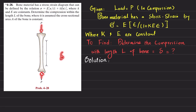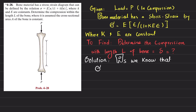Due to this load there will be a compression or change in length, and we have to find that change in length. Stress, represented as sigma, equals force per unit area. Strain, represented by epsilon, equals change in length divided by original length.